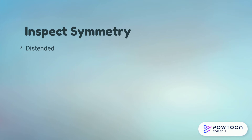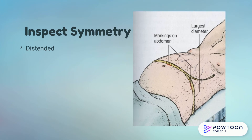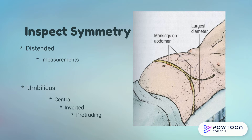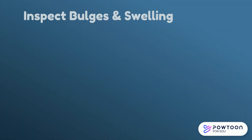Now we're inspecting for symmetry to check if the abdomen is symmetrical. We're also going to check for any type of distension. If the abdomen is in fact distended, you may need to take measurements — this is common with liver patients. Please make note of the umbilicus as well, whether it's central, inverted, or protruding.